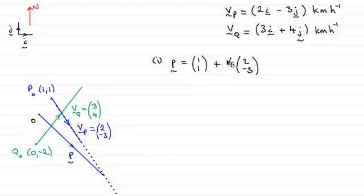After one hour, when t equals 1, it'll be up to there, followed by one lot of the vector 2 minus 3. So it'll just be 1,1 plus one lot of 2 minus 3. After two hours, what would be the position vector of p?